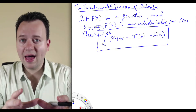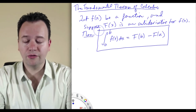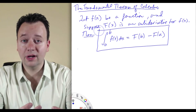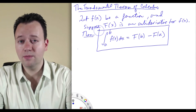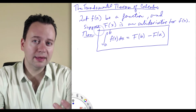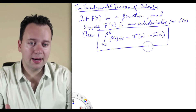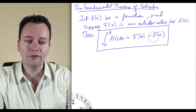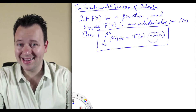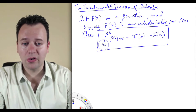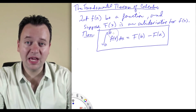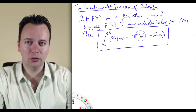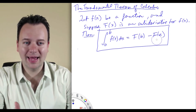This result is known as the Fundamental Theorem of Calculus, which says that whenever you have an antiderivative for a function and you want to compute the value of its definite integral from a to b, all you have to do is take the antiderivative, evaluate it at b, and then subtract off the value of the antiderivative at a. So the integral of a function from a to b is equal to the net change in its antiderivative between the points a and b.